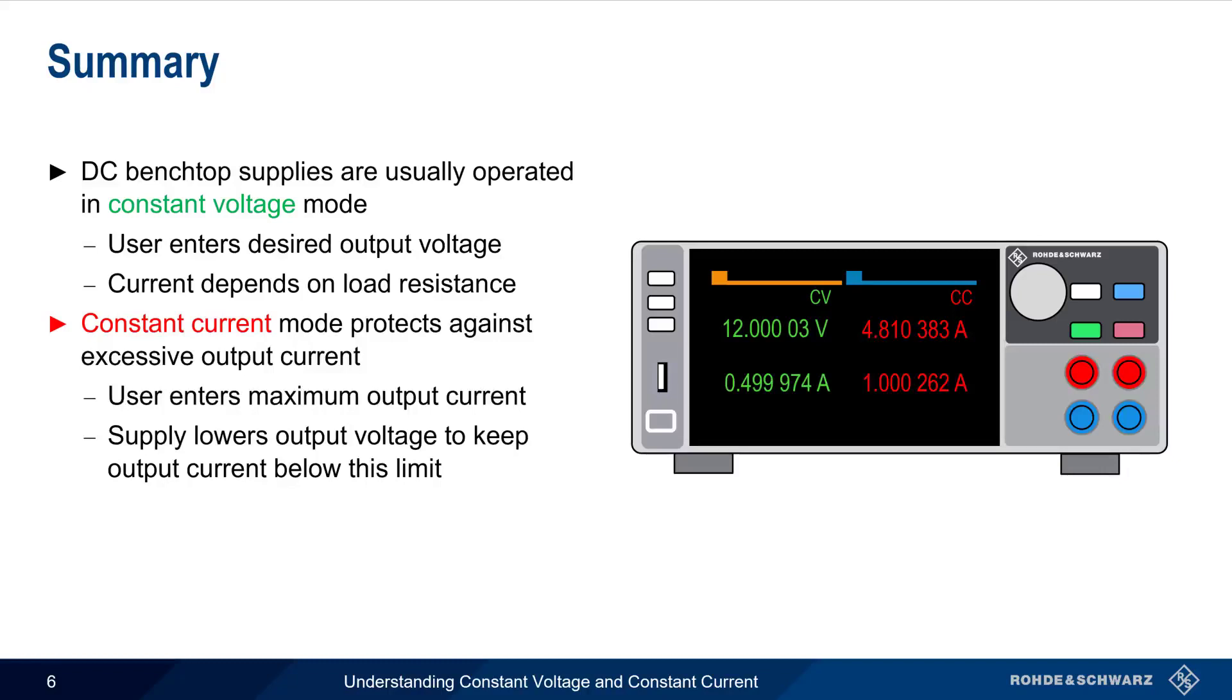Although the user configures the current limit, the transition between constant voltage and constant current mode occurs solely on the basis of the feedback current value. There's no button or menu item for toggling back and forth between these two modes.